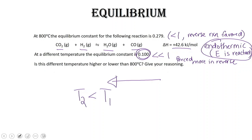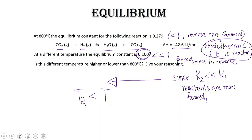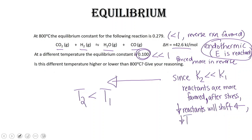Since T2 is much less than T1, reactants are more favored after the stress. A decrease in reactants shifts the reaction toward the left, and since we are talking about energy, a decrease in temperature shifts this endothermic reaction to the left.